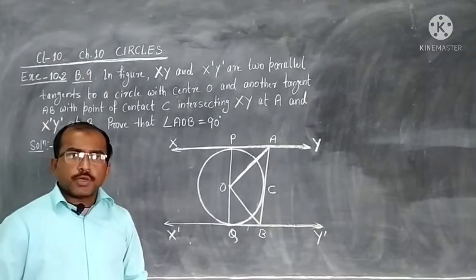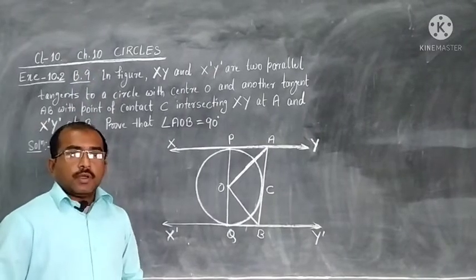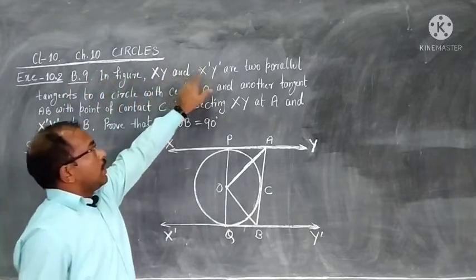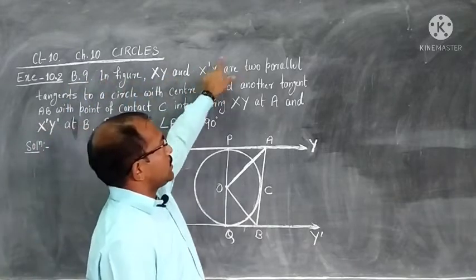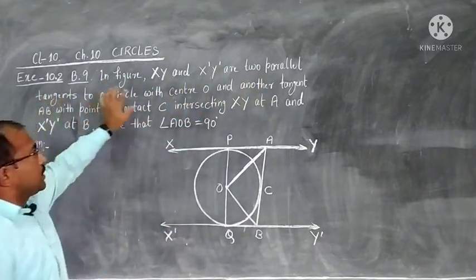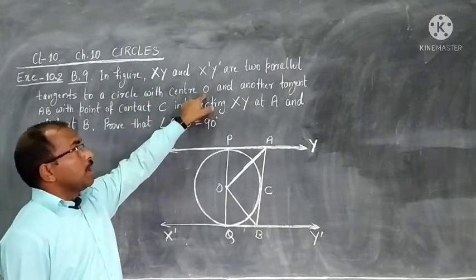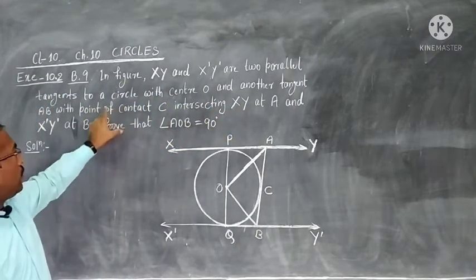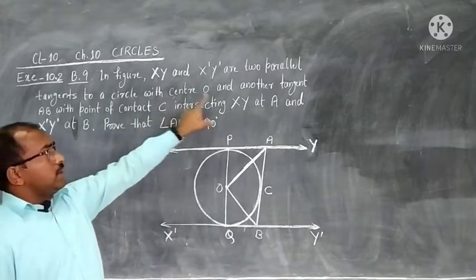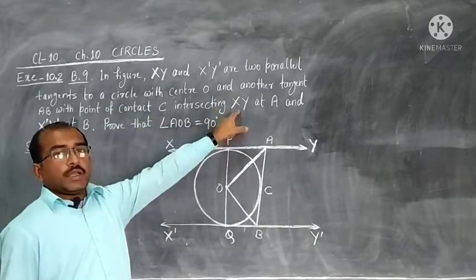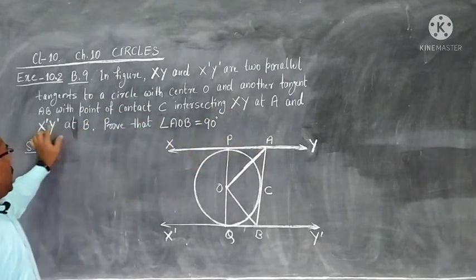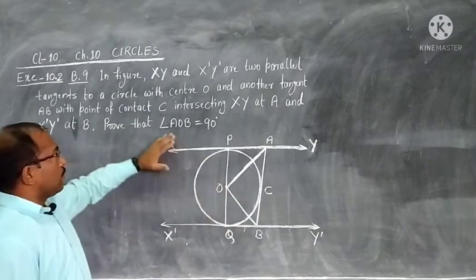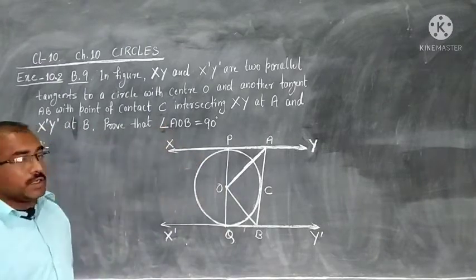From exercise 10.2. In the figure, XY and X'Y' are two parallel tangents to a circle with center O, and another tangent AB with point of contact C intersects XY at A and X'Y' at B. We have to prove that angle AOB is 90 degrees.